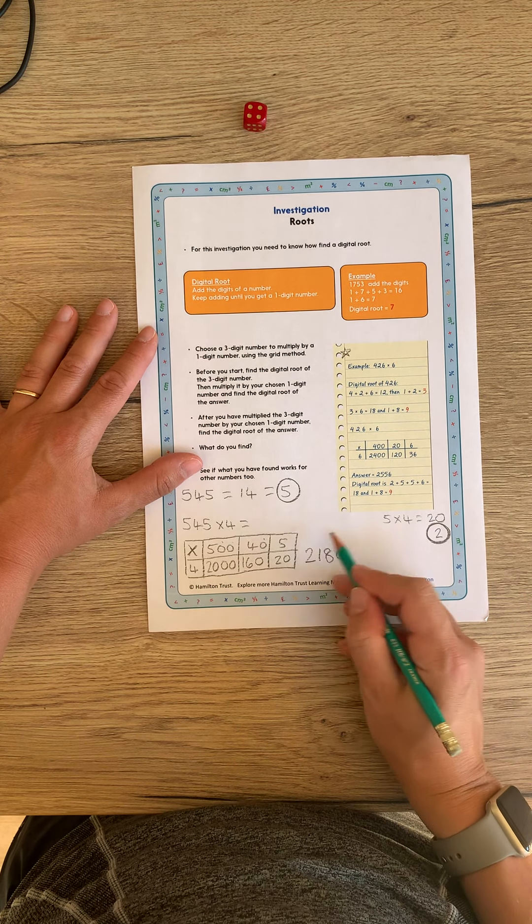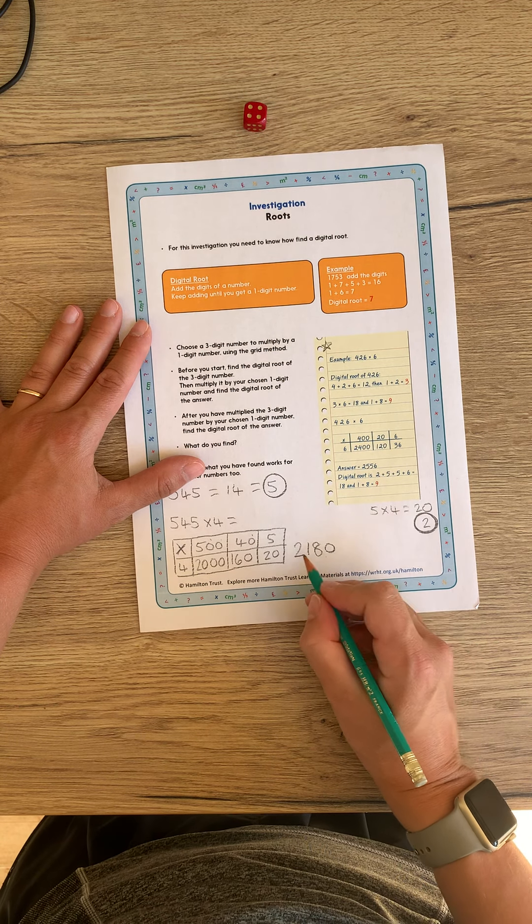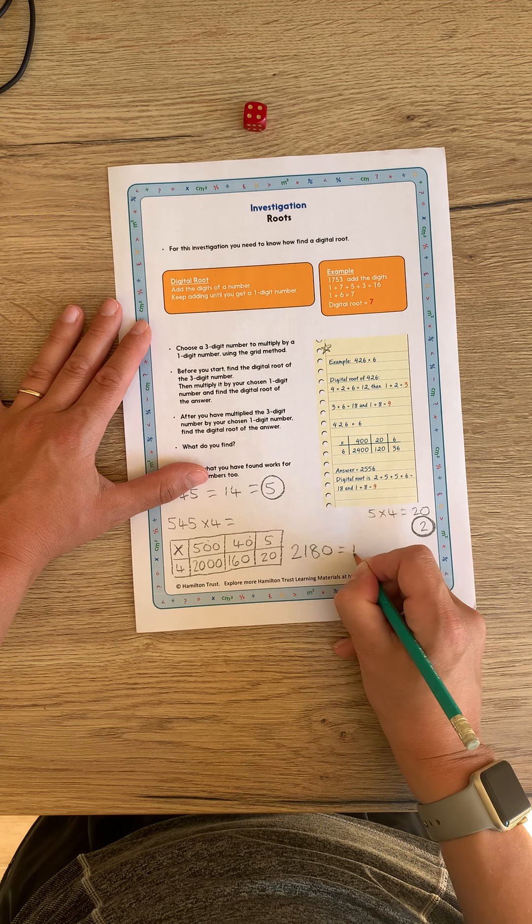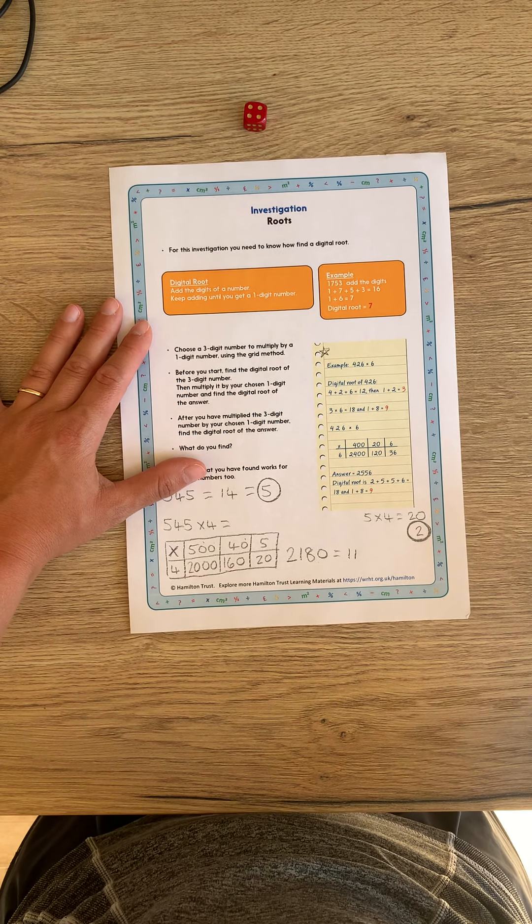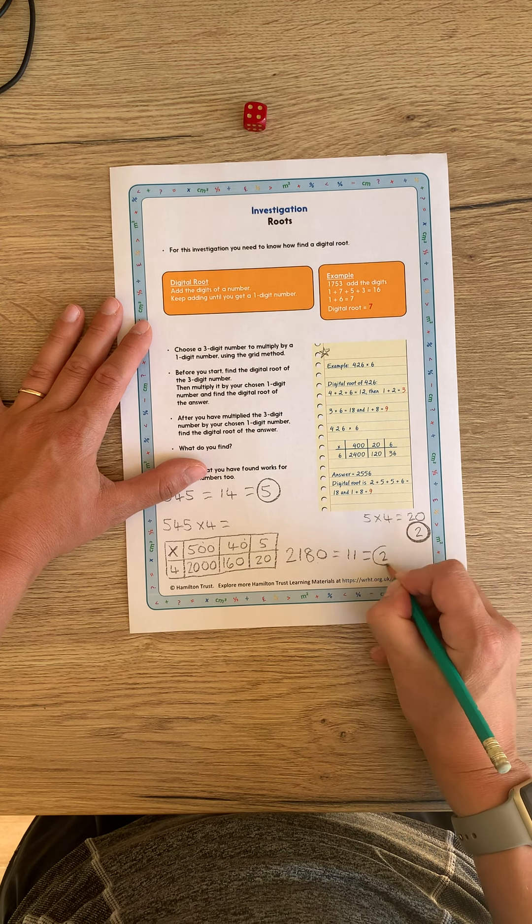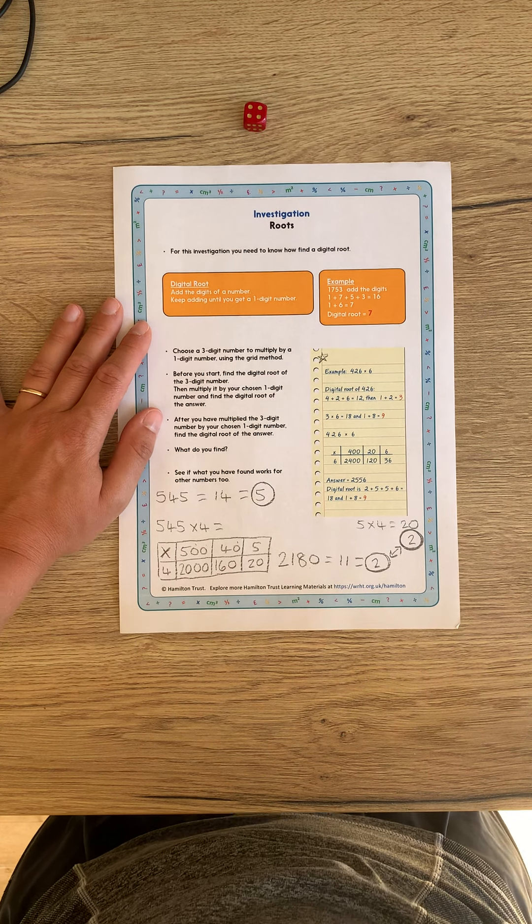Now I'm going to find the digital route for this number, which means adding all of the digits together. So 2 add 1 add 8 add 0 is 11. That's not a one-digit number. I'm going to have to do it again. 1 add 1 is 2. They match. The theory works.